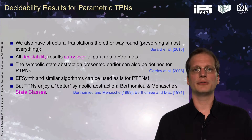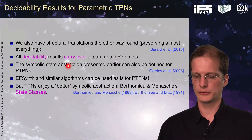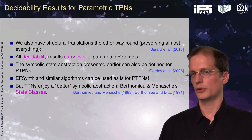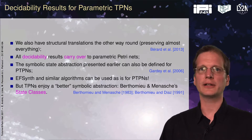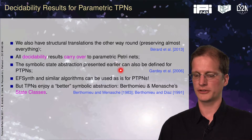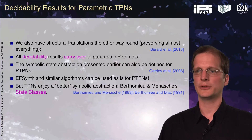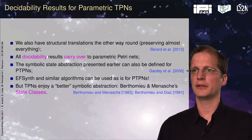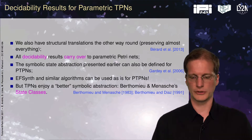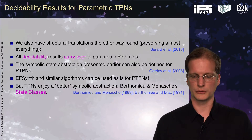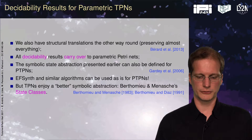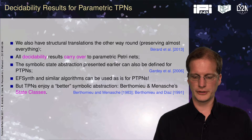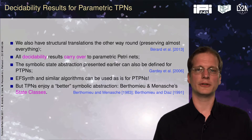We have seen in another sequence that we used an abstraction of the state space of parametric timed automata, and we can define exactly the same for parametric time Petri nets. But we have a better one — in some sense coarser, and simpler to use in practice — which is the state class abstraction from Bertomieux and Menasche. We will now see how this abstraction can be extended to parameters.